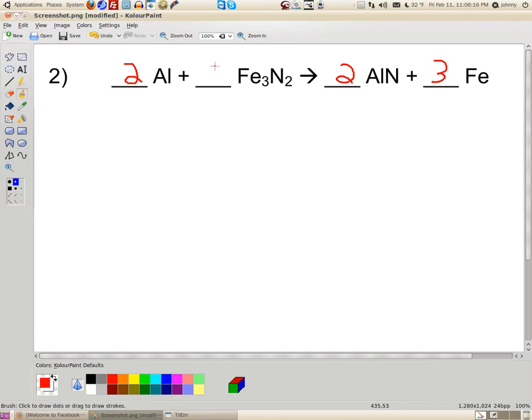And right here, since there's a blank, I'm just going to put a one. And if you notice, I'm now balanced. Two aluminums. Two aluminums. Three irons. Because one times three is three irons. And here, three irons. And two nitrogens. One times two is two nitrogens. And two times this one N here is two nitrogens. So we're balanced.